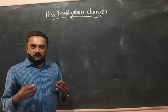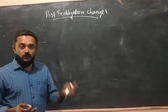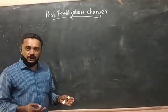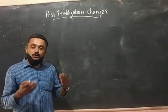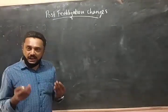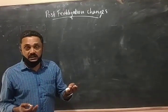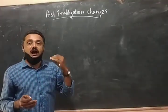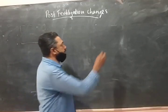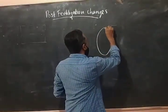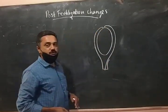Now we come to the third part of reproduction: post-fertilization changes. Today we will discuss the post-fertilization changes — how they take place in angiosperms. The changes after fertilization are called post-fertilization changes. And before that, what are the products of fertilization? We have two products of fertilization.